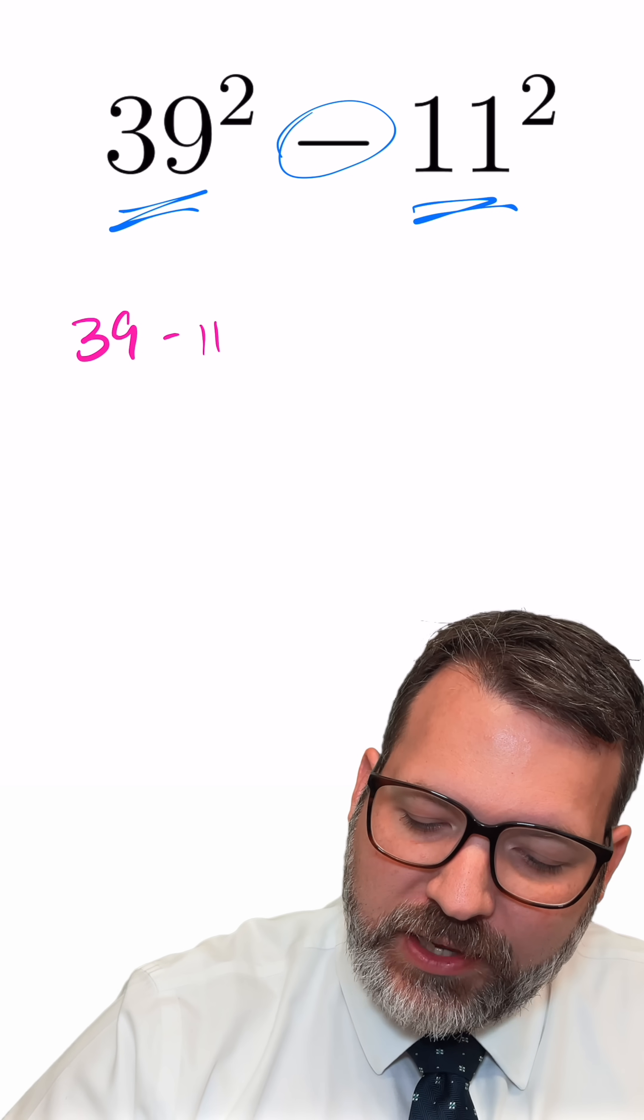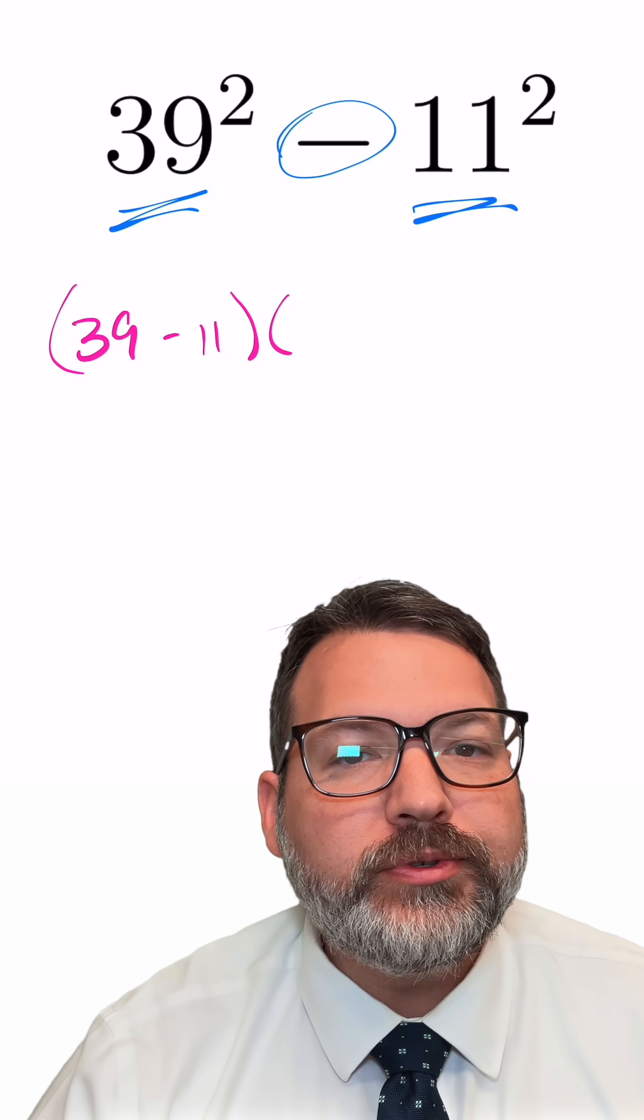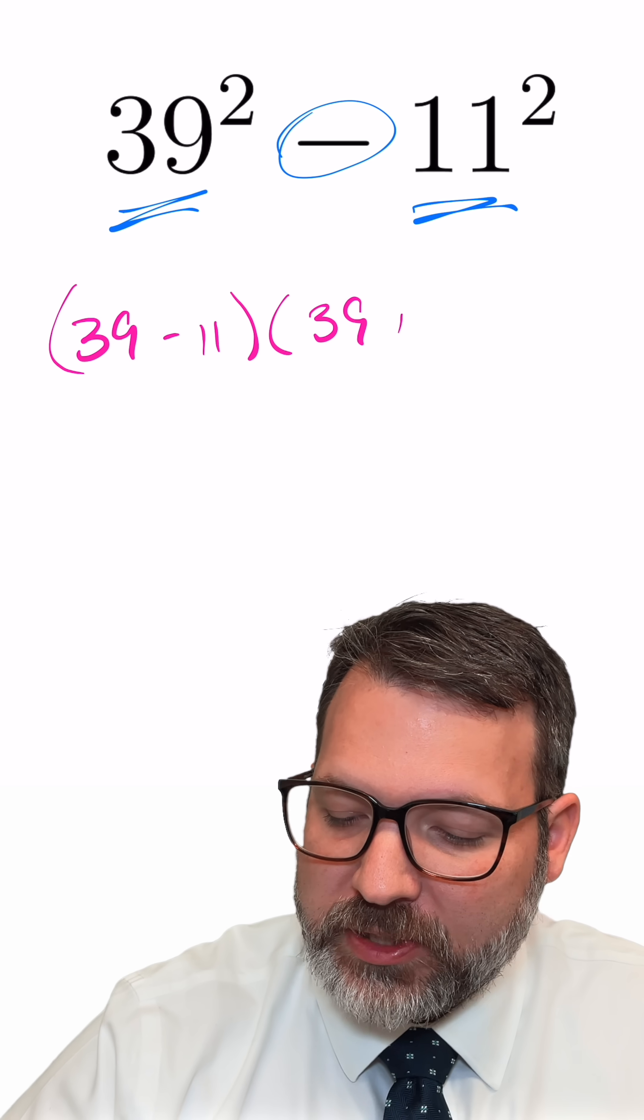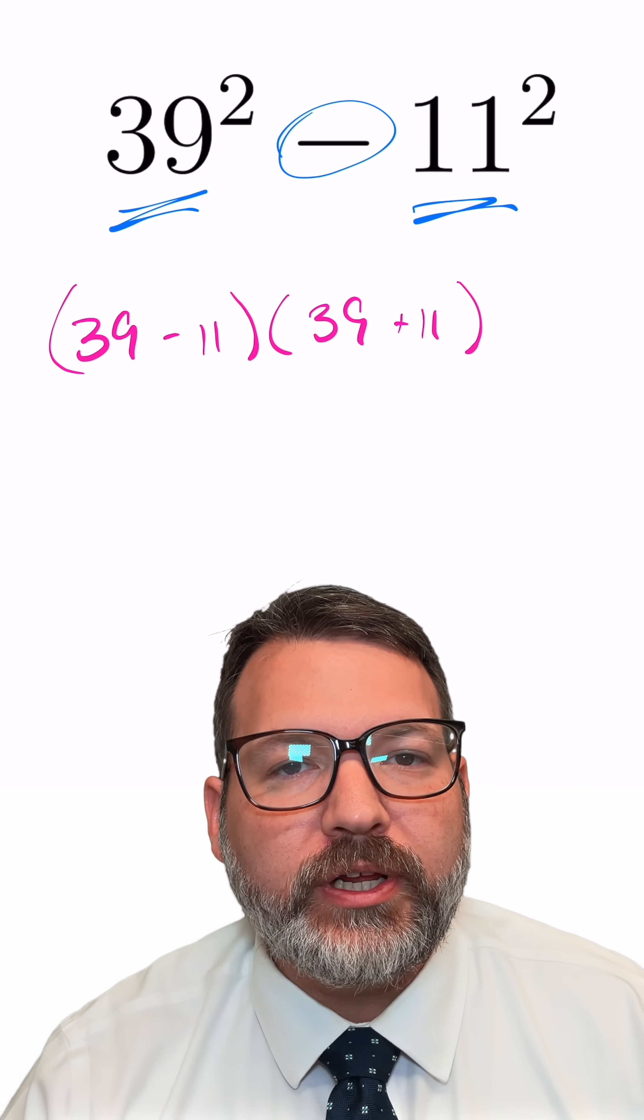This must be the same thing as the difference between the two roots, 39 minus 11, times the sum of the two roots, 39 plus 11.